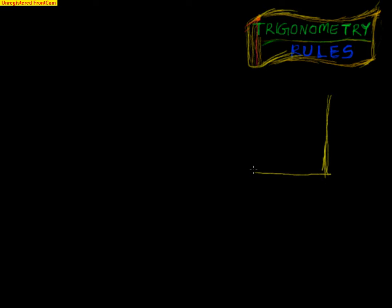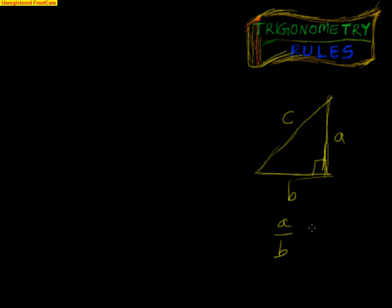If this is a right angle triangle, if these are the sides of a right angle triangle, then I can use trigonometric ratios — mathematical tools with the help of which I can give the relation between a by b, b by a, c by a, whatever you want in between them.